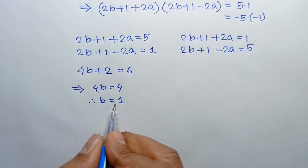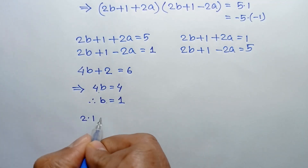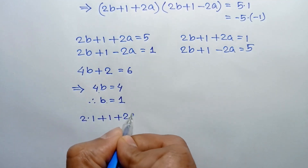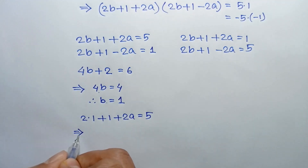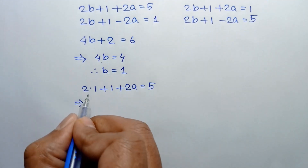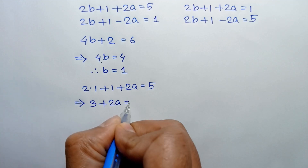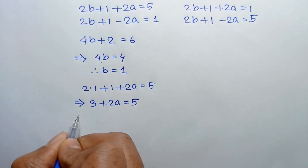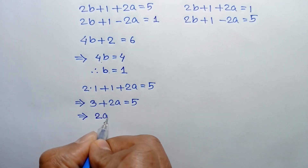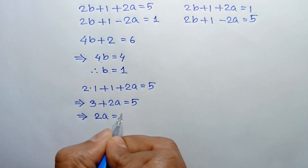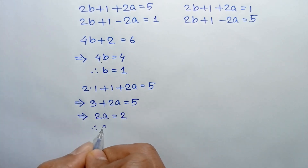Substituting b = 1 into the first equation: 2(1) + 1 + 2a = 5, so 3 + 2a = 5. Taking 3 to the right side, 2a = 2. Dividing both sides by 2, a = 1.